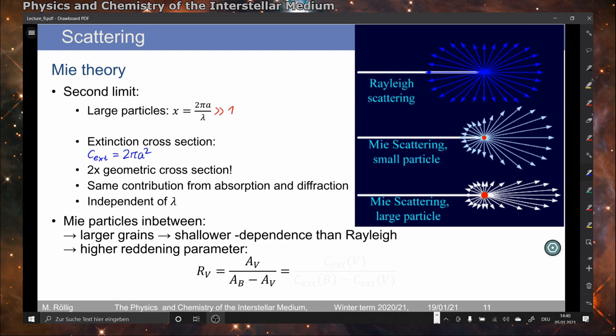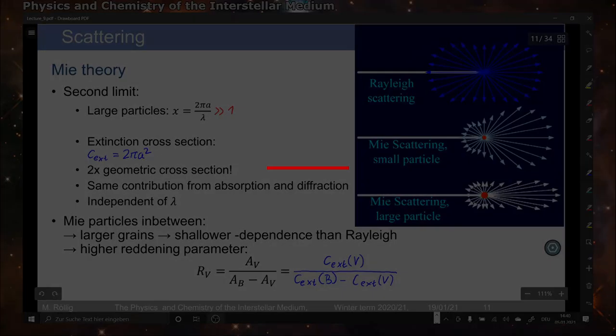Between the limits, we are talking about so-called Mie particles. Here we find that larger grains have a shallower dependence than Rayleigh and a higher reddening parameter R, which is the ratio between the visual extinction and the blue minus the visual extinction, given by the extinction at the visual wavelength over the difference between the blue and the visual extinction cross-section.